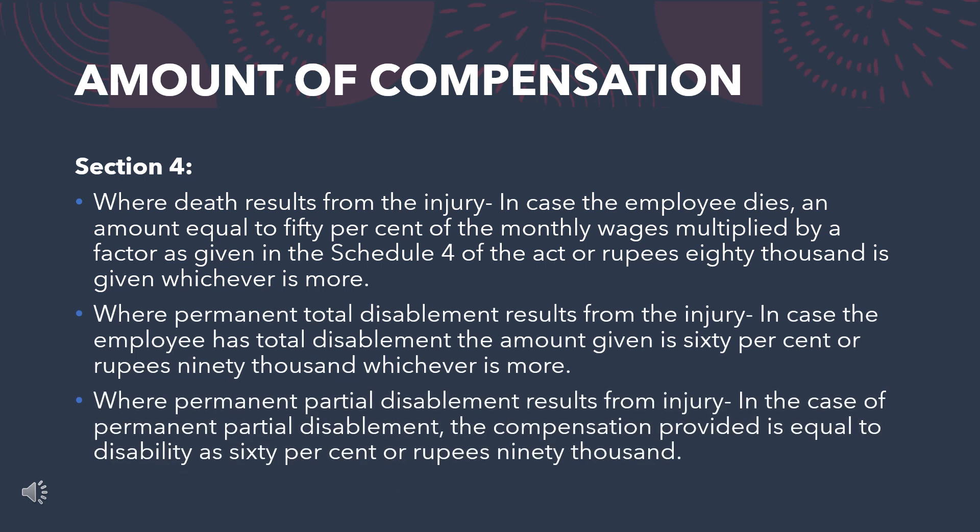Section 4 defines how much compensation is paid to any employee in a particular case. Where death results from the injury: in case the employee dies, an amount equal to 50% of the monthly wages multiplied by a relevant factor as given in Schedule 4 of the act, or rupees 80,000, whichever is more. Where permanent total disablement results from the injury: the amount given is 60% of monthly wages or rupees 90,000, whichever is more.